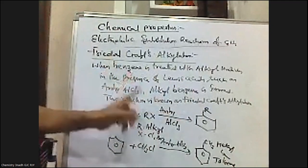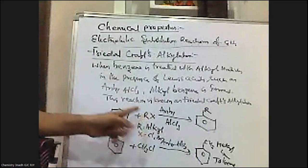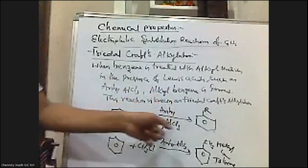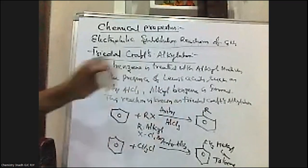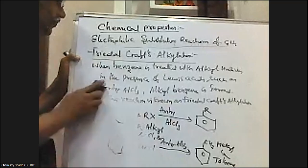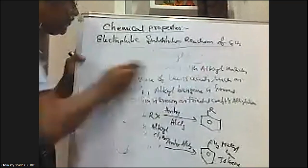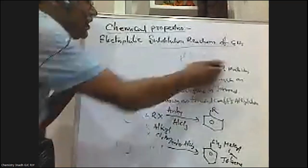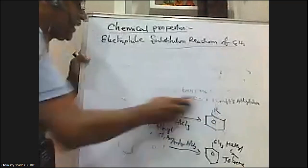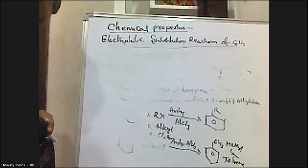The alkyl group is represented with capital R. When benzene is treated with RX in the presence of anhydrous aluminum chloride, alkyl benzene is formed. The next reaction is Friedel-Crafts acylation.